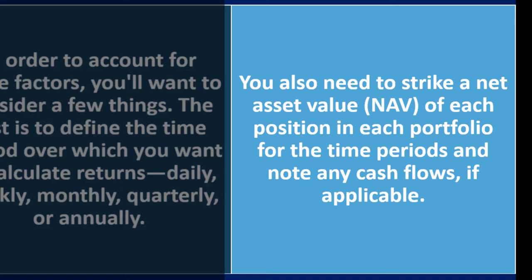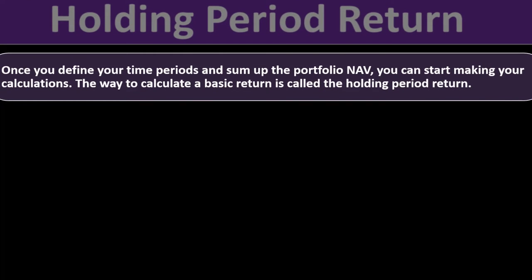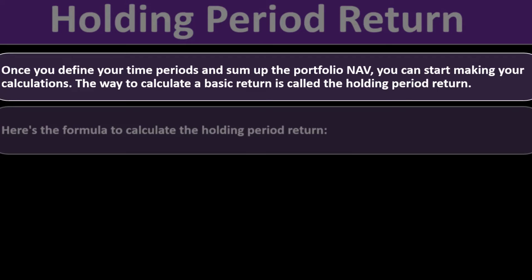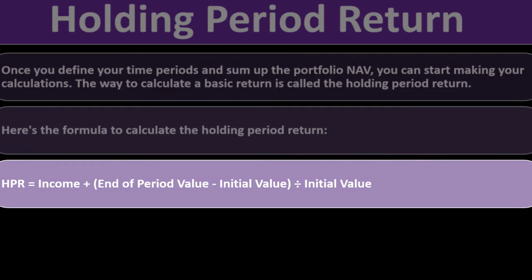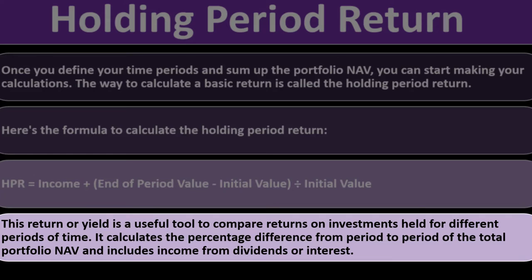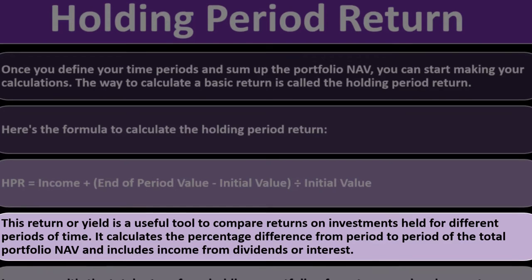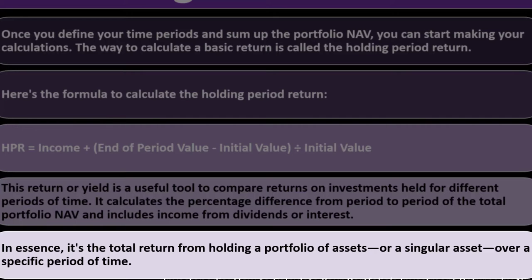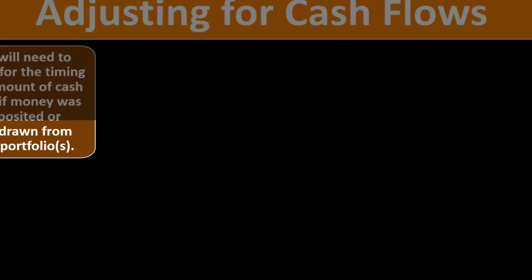Holding period return: once you define your time periods and sum up the portfolio's NAV, you can start making your calculations. The way to calculate a basic return is called the holding period return. Here's the formula to calculate the holding period return: HPR equals income plus end of period value minus the initial value, divided by the initial value. This return or yield is a useful tool to compare returns on investments held for different periods of time. It calculates the percentage difference from period to period of the total portfolio NAV and calculates income from dividends or interest.